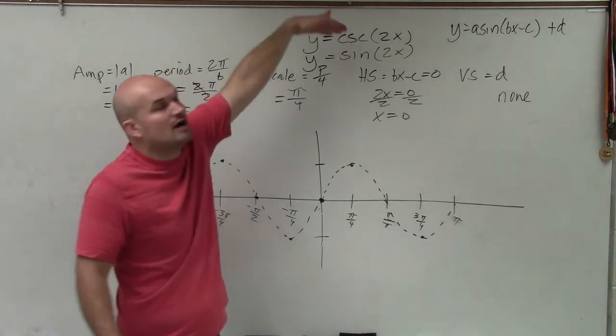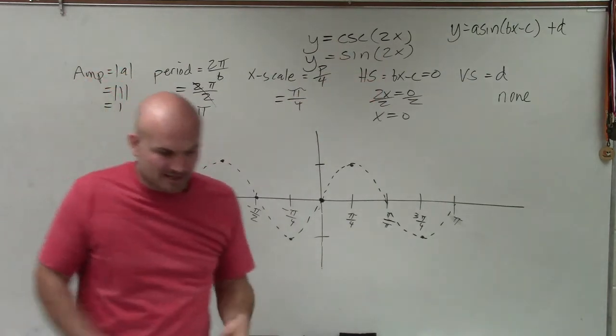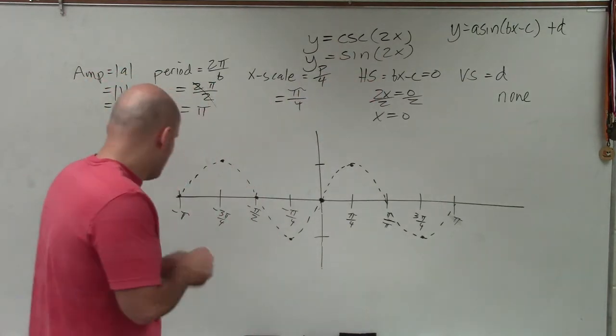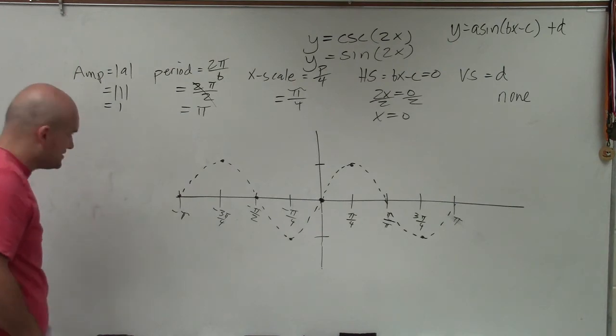So that is what sine of 2x equals. But again, remember, trying to figure out what cosecant of 2x is going to be. So when we're graphing the cosecant function from sine, there's a couple important points that we need to know.